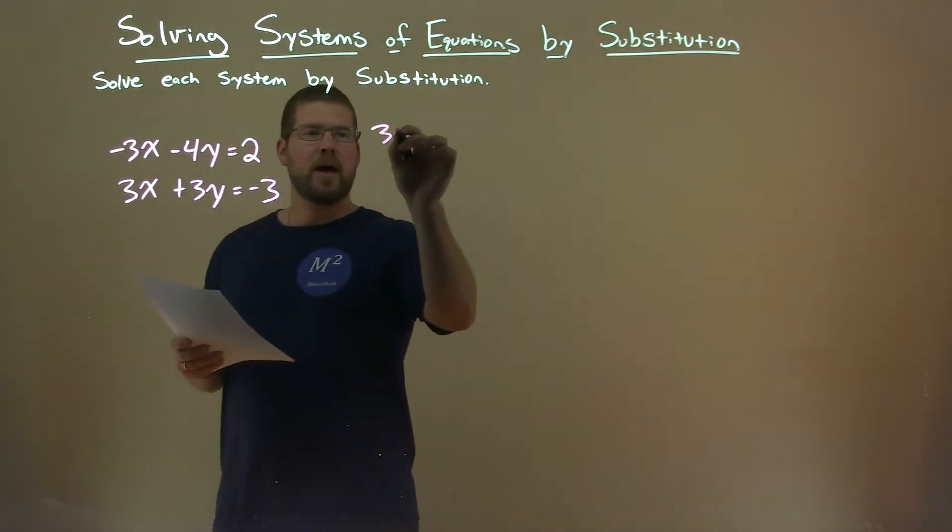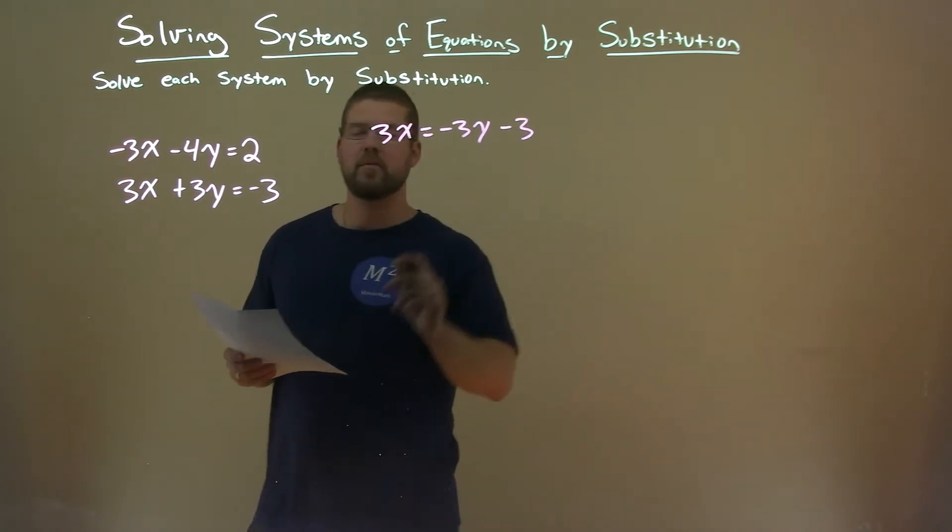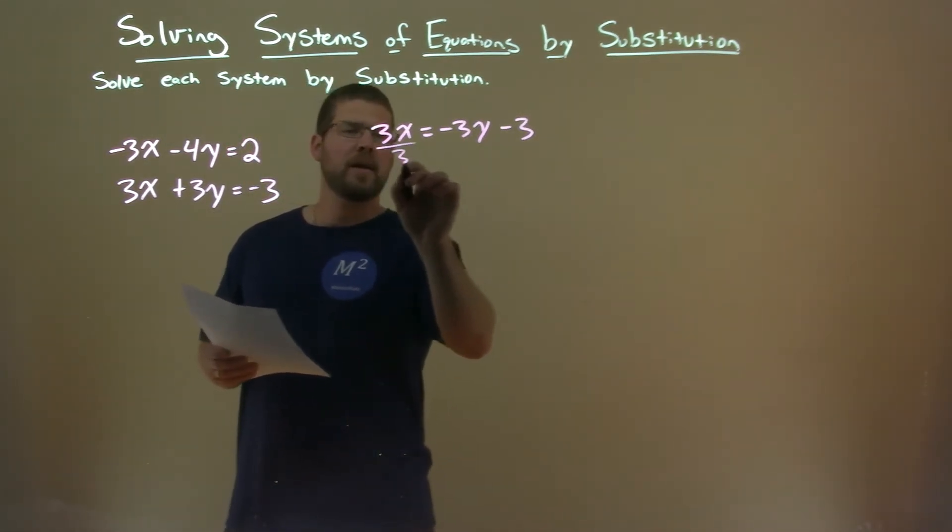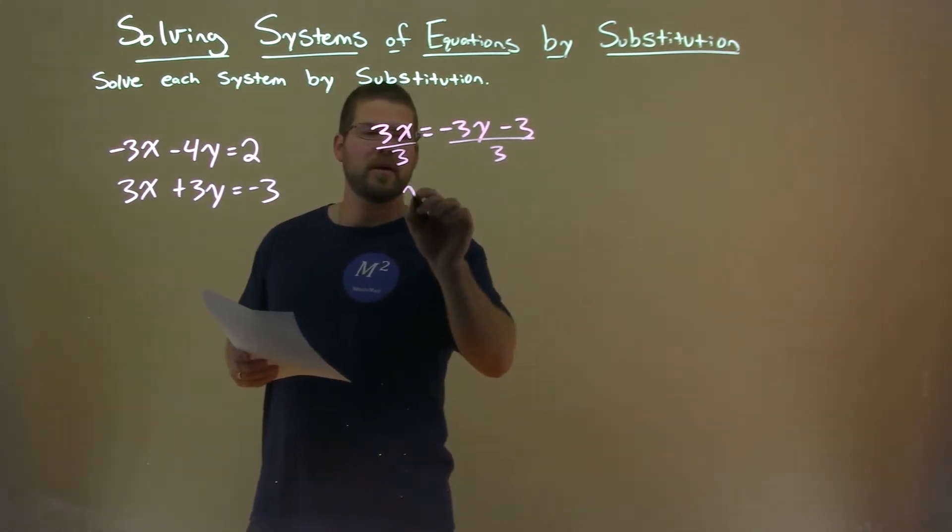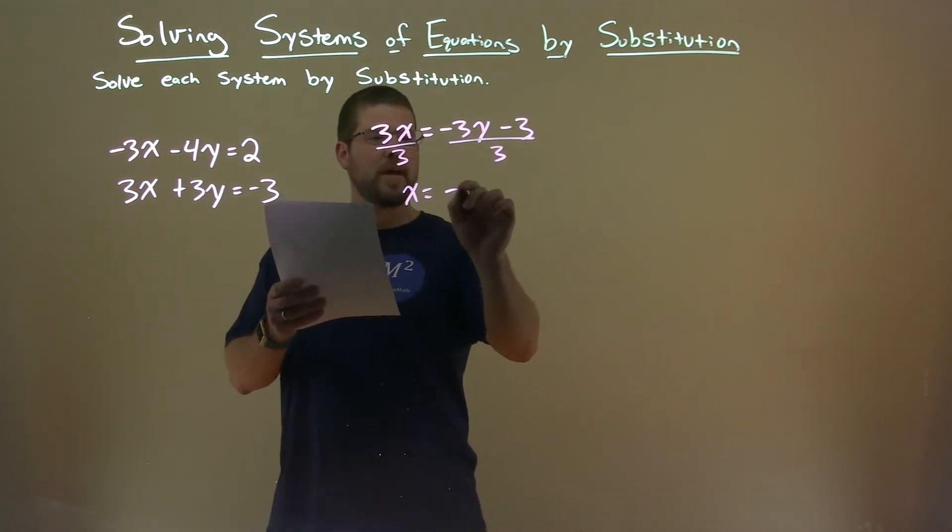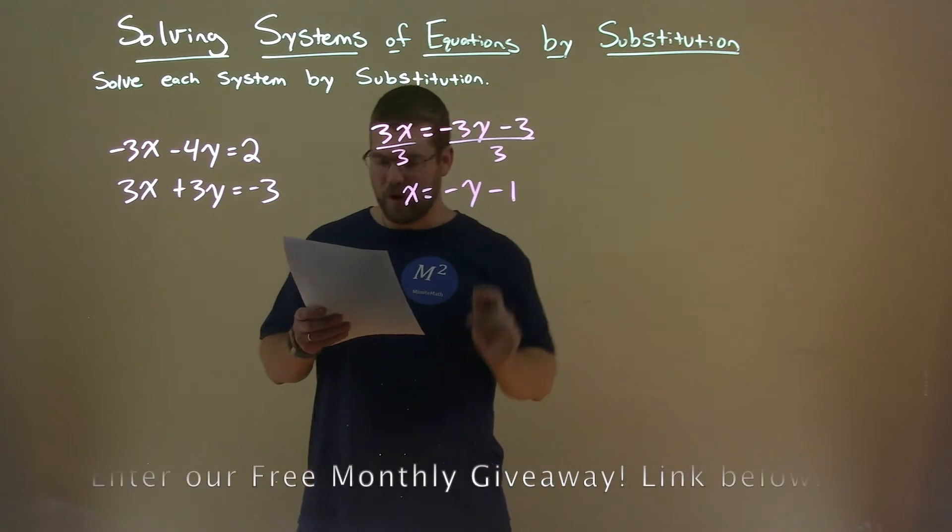That gives us here 3x equals negative 3y minus 3. And then I can divide both sides by 3, and now x is by itself. Negative 3 divided by 3 is negative 1, so we have negative y here. And negative 3 divided by 3 is negative 1 there.